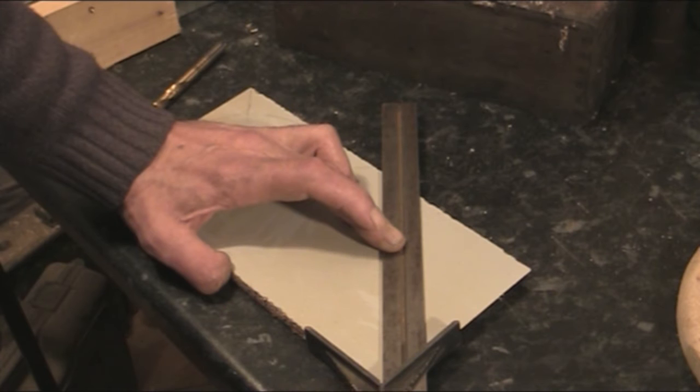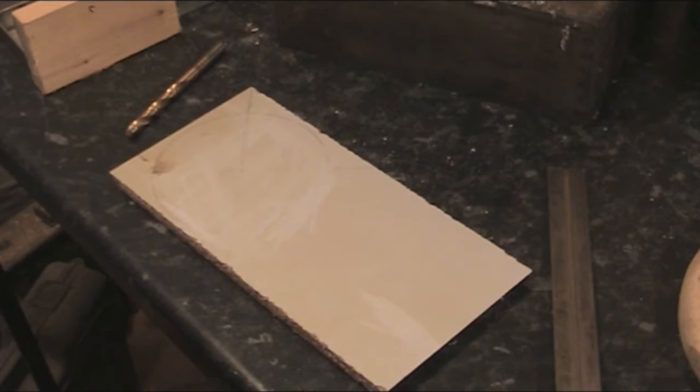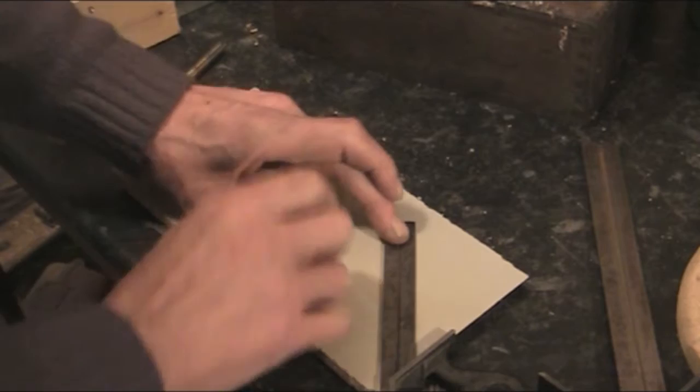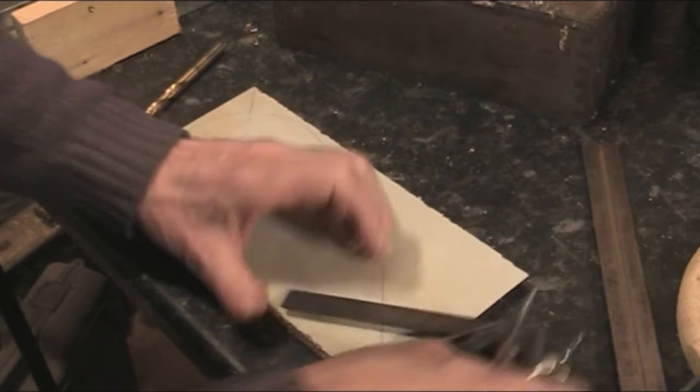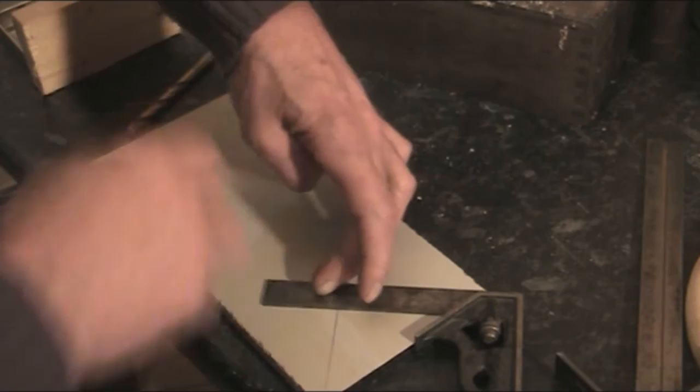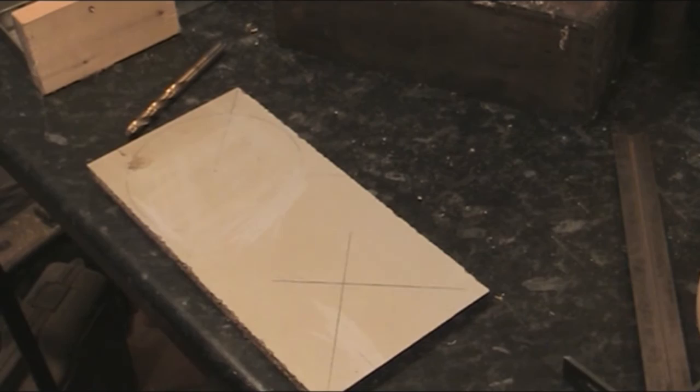I'm using a center pointing square. You can use a square like this, especially if you've only got one straight edge. You can draw your lines. As long as that one side is nice and straight, you'll get your cross in the middle, which will be at 90 degrees to each other.